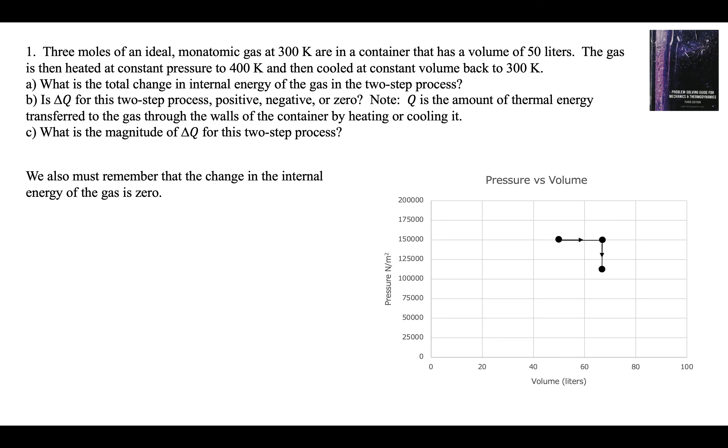The change in internal energy of the gas is zero. It's at the same temperature. We could put this as an isotherm, same temperature. All of the points on this line are 300 kelvins. These two points are on the line. Those are both 300 kelvins. They have the same internal energy.